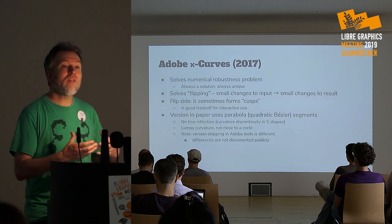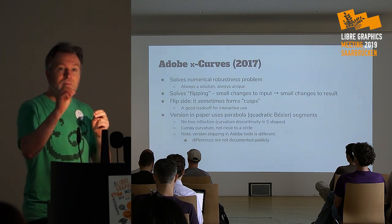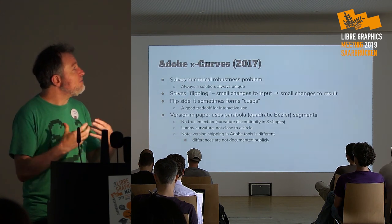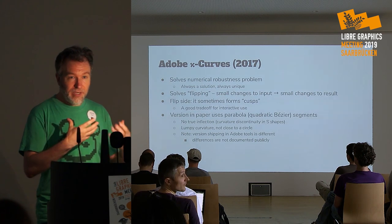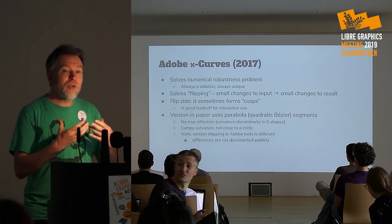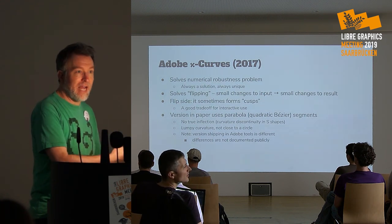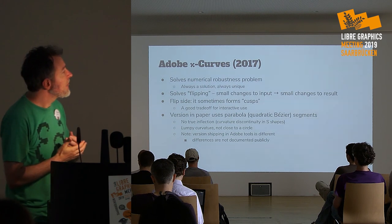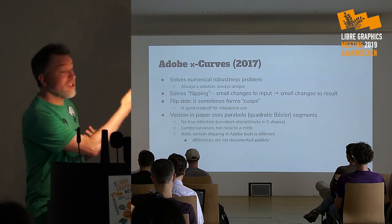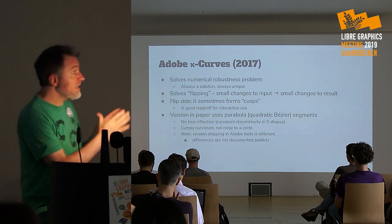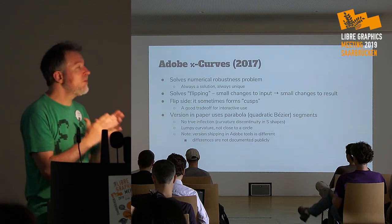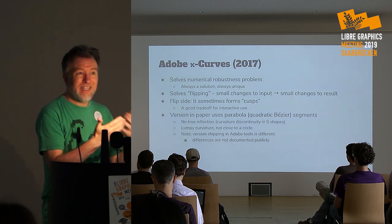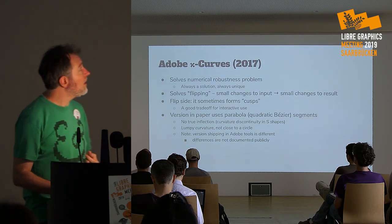This is a very interesting spline — it solves the numerical robustness problem: there is always a solution and always a unique solution. More than that, every time you move a control point by a small amount it only changes the resulting curve by a small amount, so there's a deep robustness to this. However, everything in splines is a trade-off: you don't get curvature smoothness as smooth as an Euler spiral spline; instead you get cusps. The version in the paper is entirely based on quadratic Bezier parabola segments, which means it can't make a true S-shape, doesn't go perfectly through an inflection point, and doesn't make a circle.